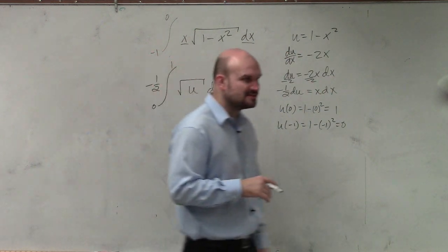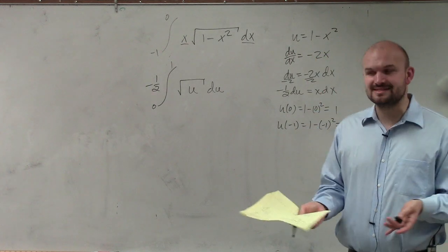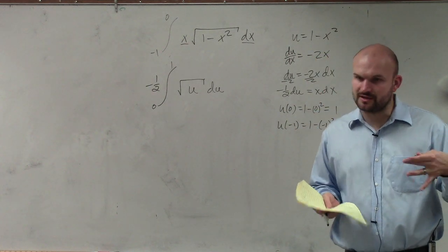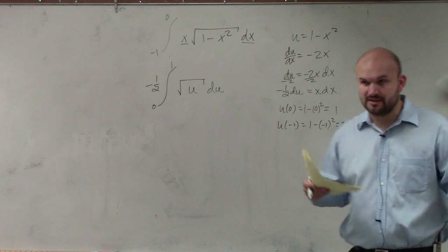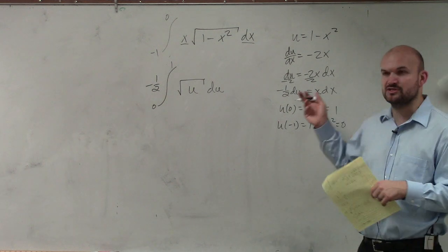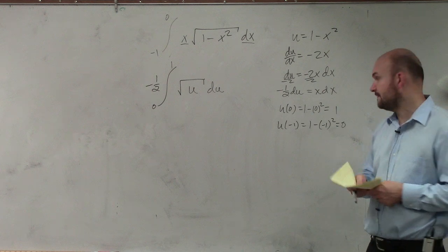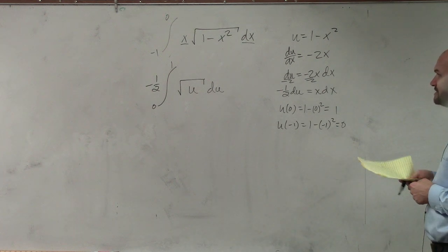So just make sure you guys are using parentheses around that. And just be hesitant when you're using your calculator, because your calculator, you still got to use parentheses, even when you're using a calculator. Because if you guys type in negative 1 squared, your calculator will give you negative 1. It won't give you positive 1.